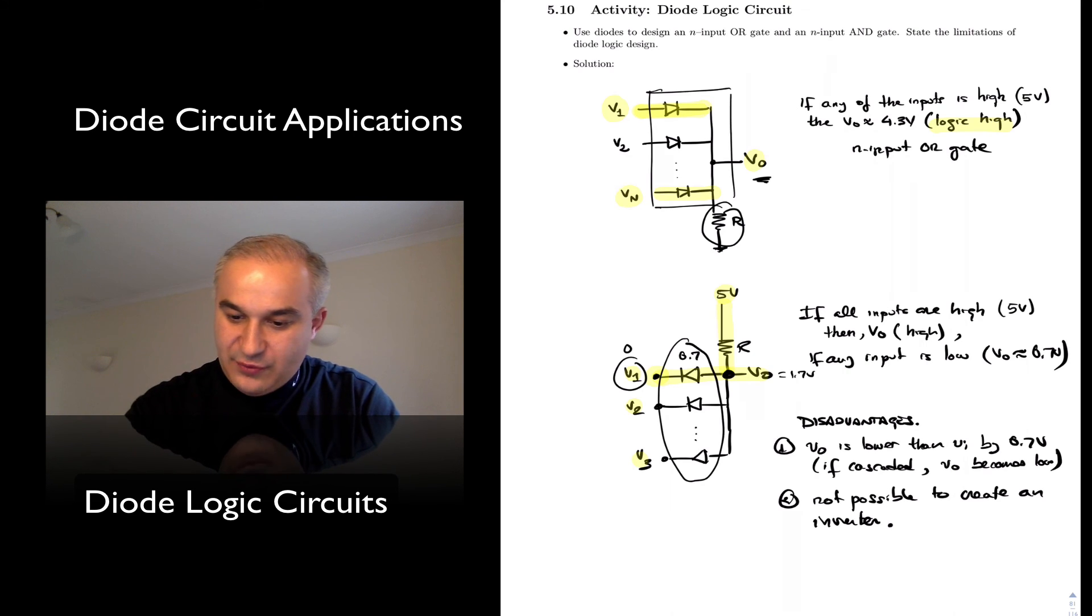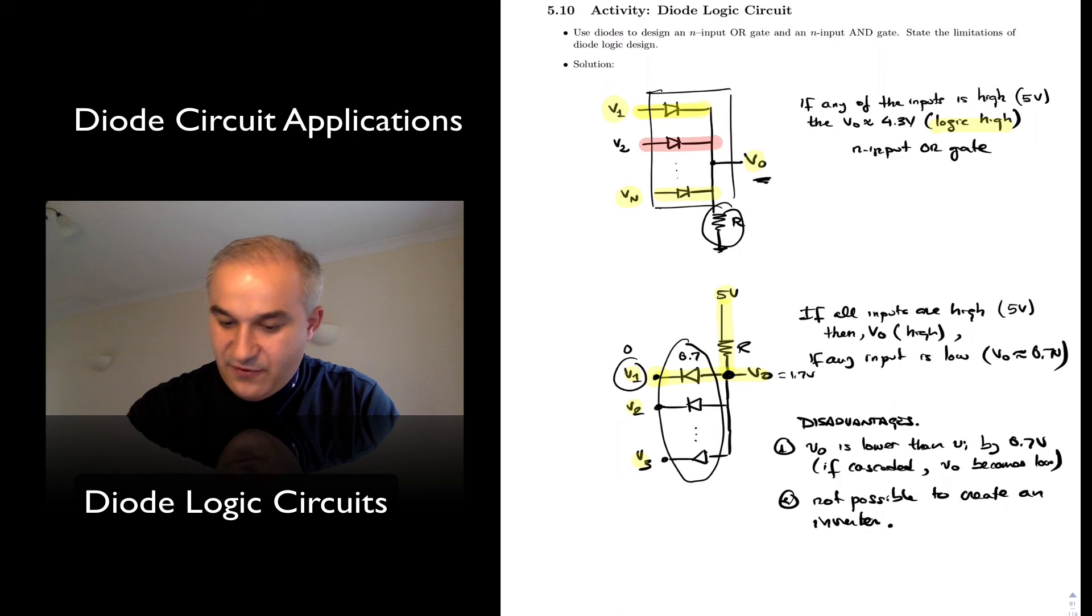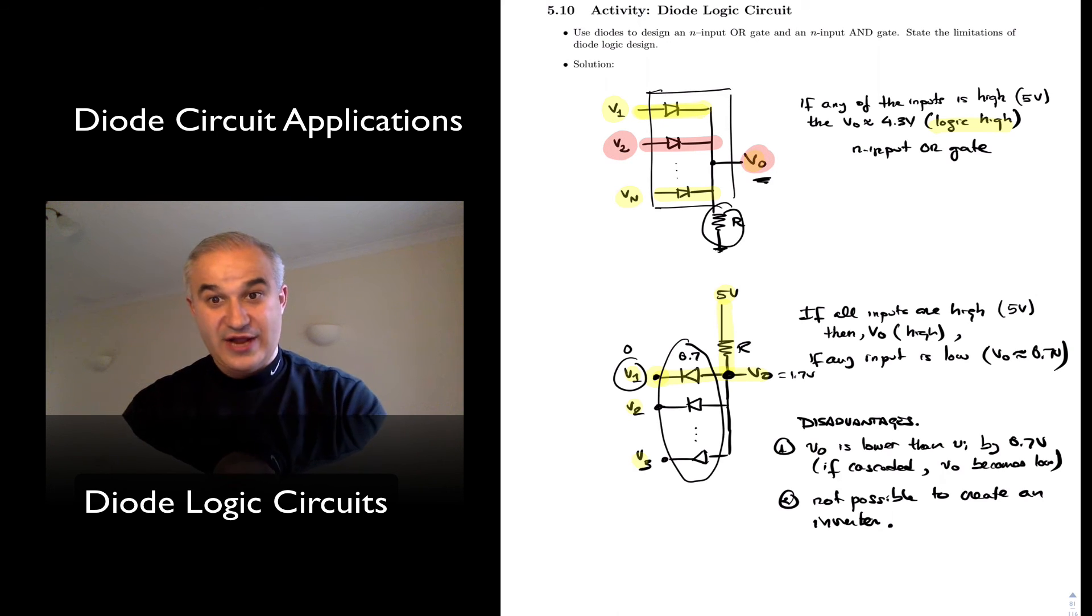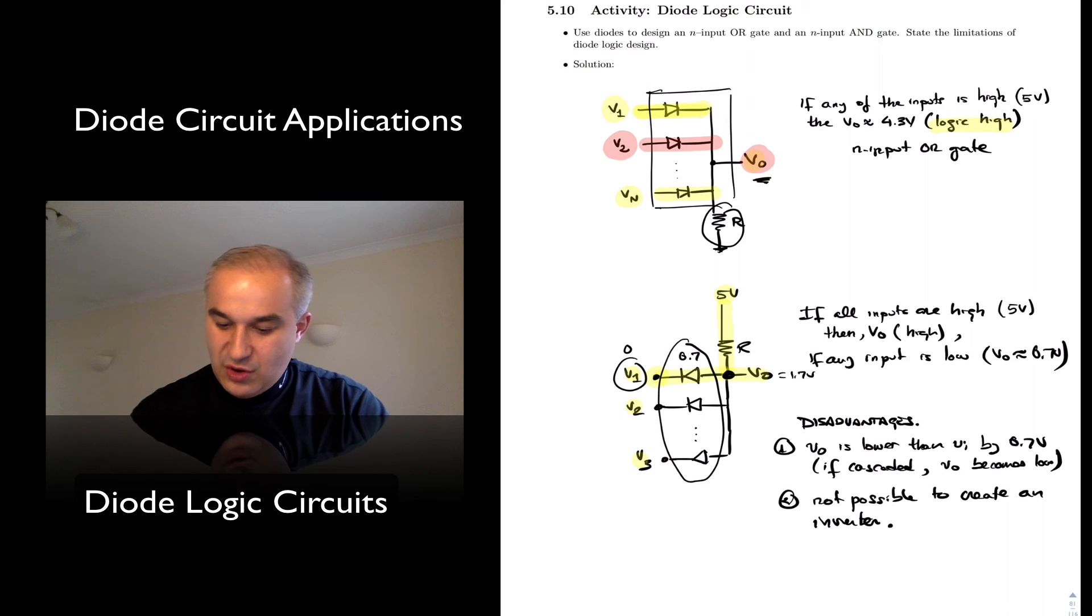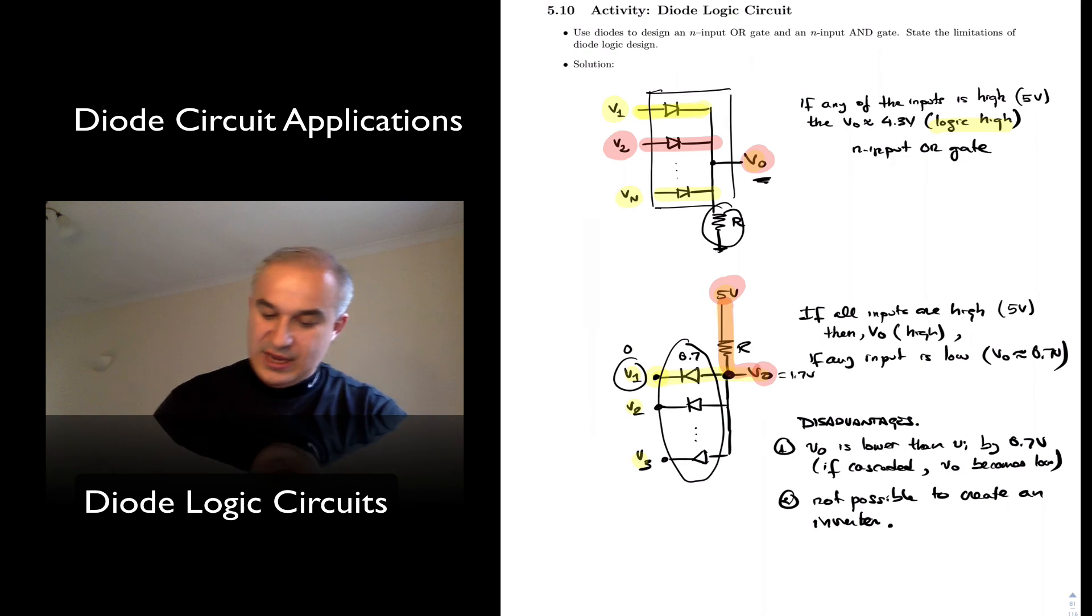And remember, you just have to remember that in the OR, if anyone is conducting, what you have is your high minus 0.7 volts to give you your logic high. Or in this case, all of them are off, so you get a pull-up resistor output, go to 5 volts, high logic.